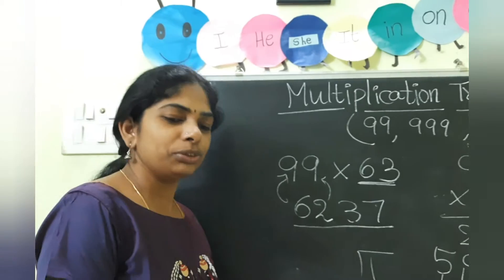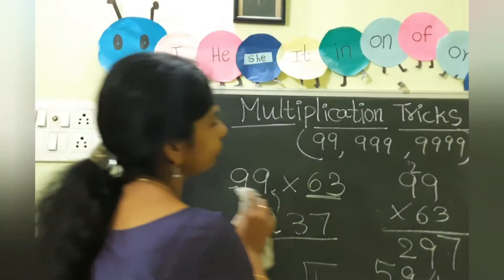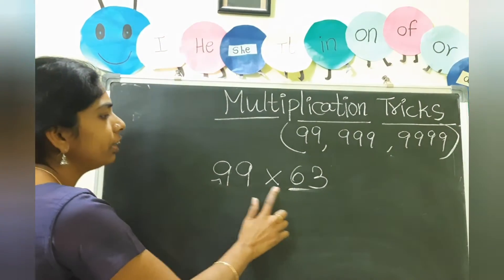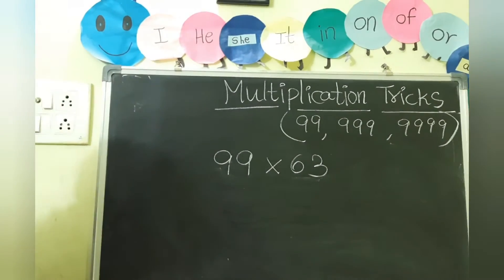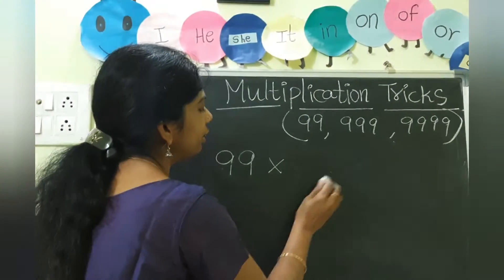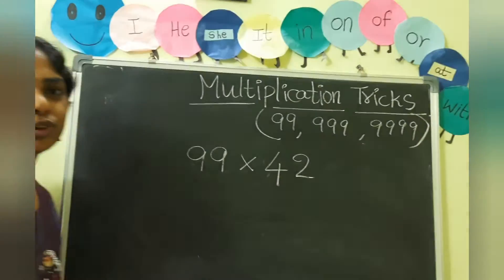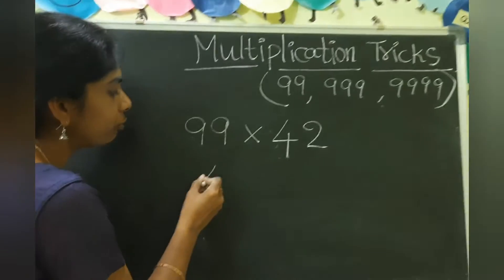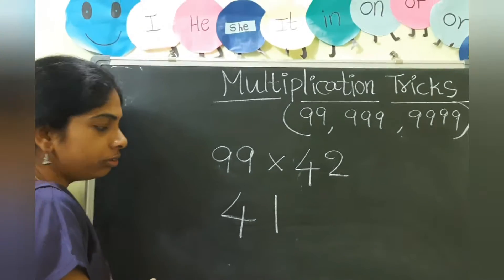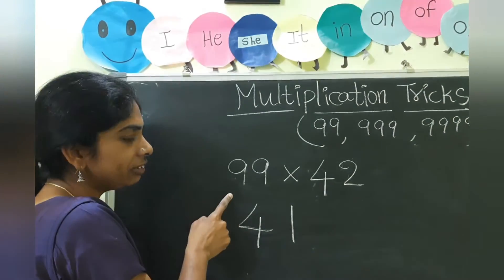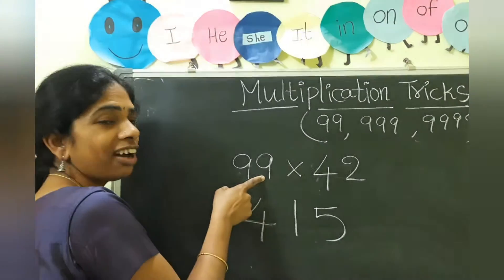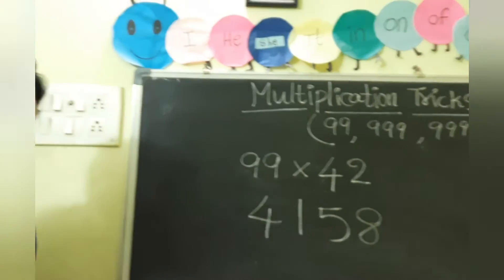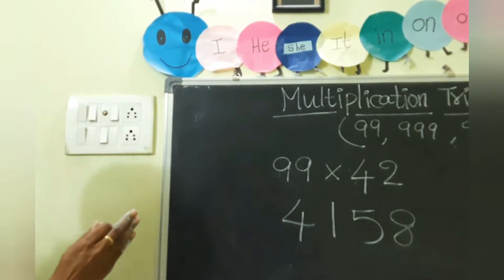So now I will tell you one more example. You can directly write the answer within 2, 3 seconds. Now I take the number 42. So what is the before number of 42? 41. Now what we have to do? 4 plus how much gives 9? 5. 1 plus how much gives 9? 8. So what is the answer? 4158.